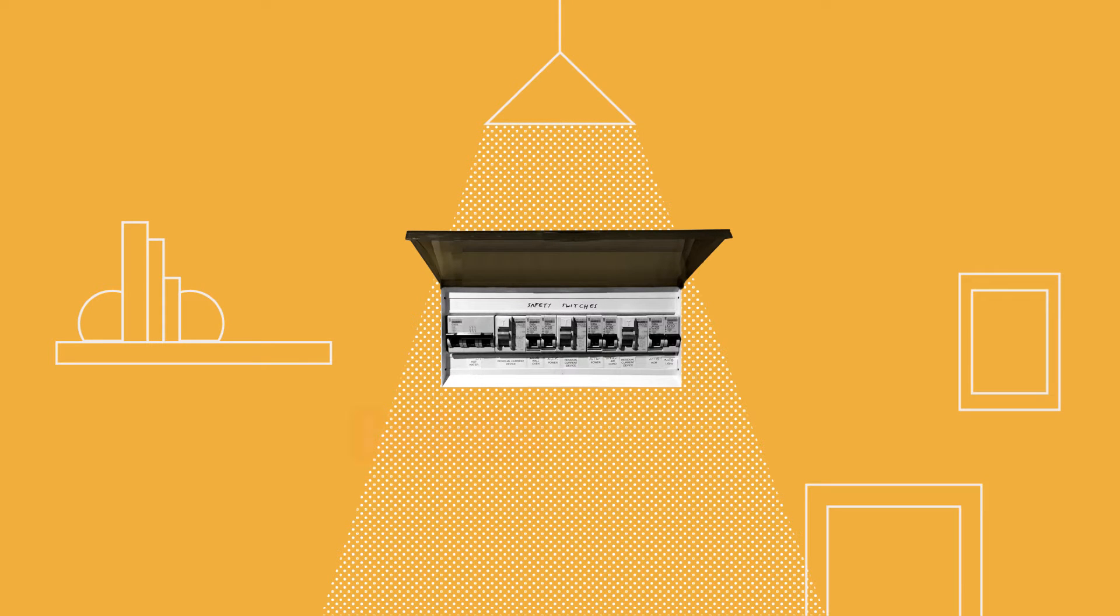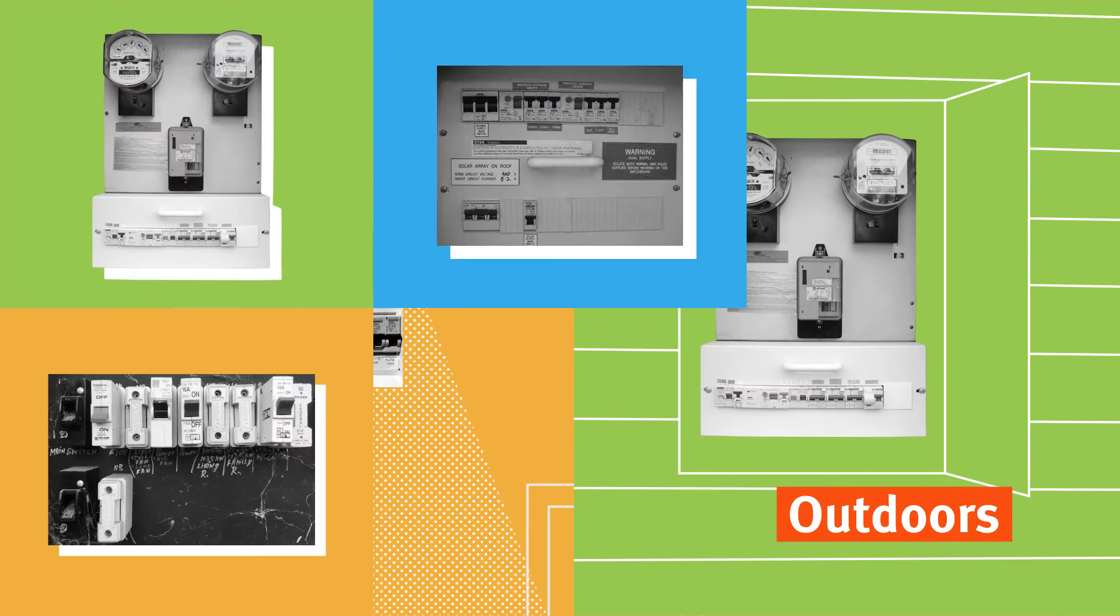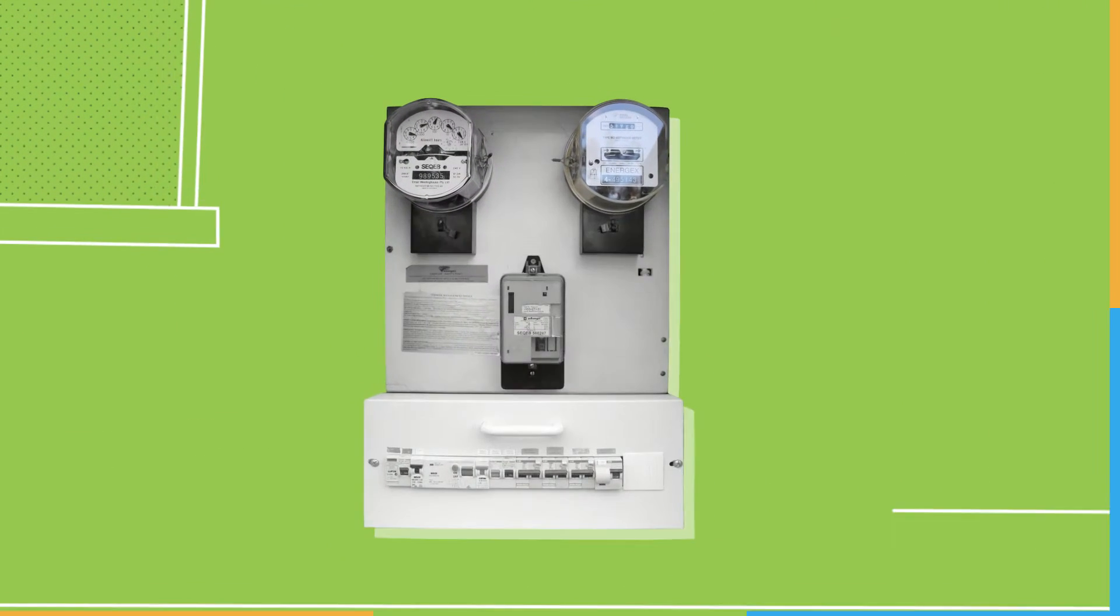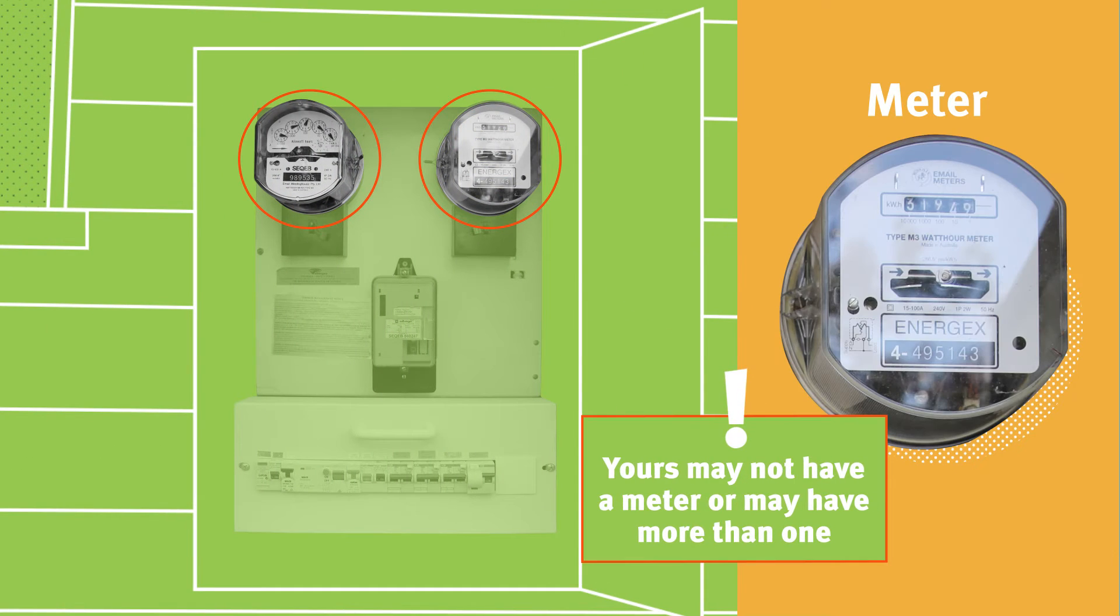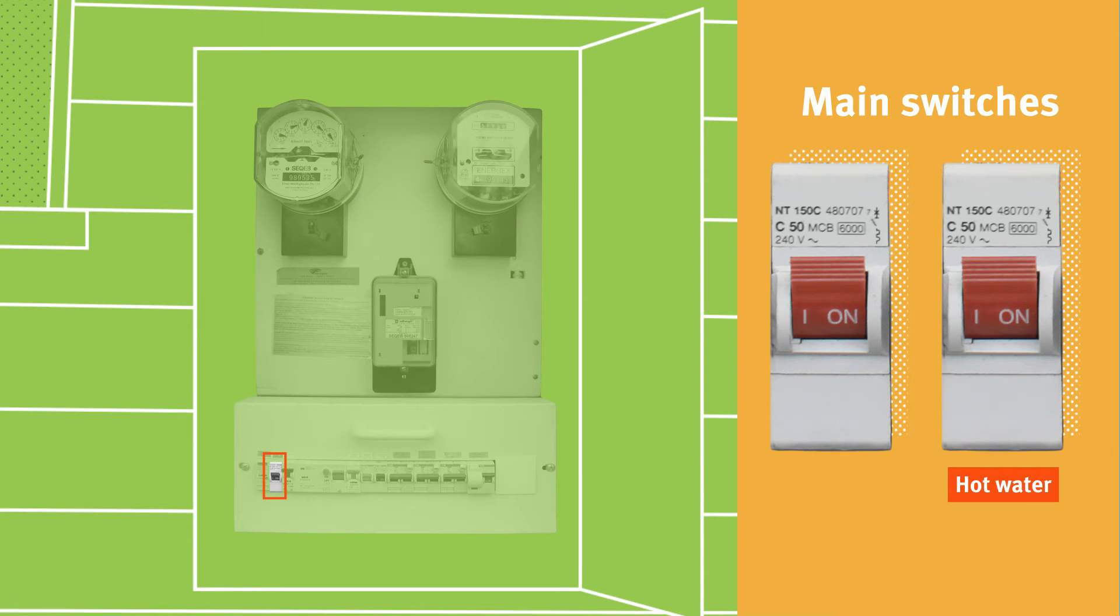Switchboards can be installed indoors or outdoors. They may look different, but the main parts are similar. There's the meter to measure energy use and main switches to turn the power on and off to the different circuits.